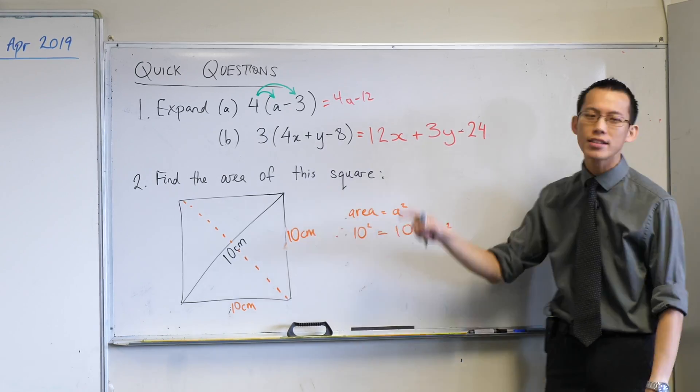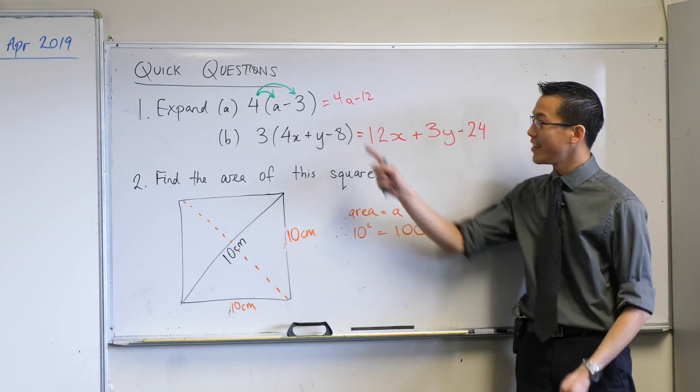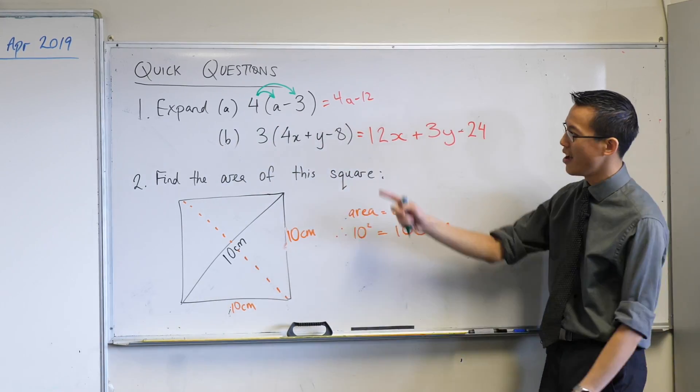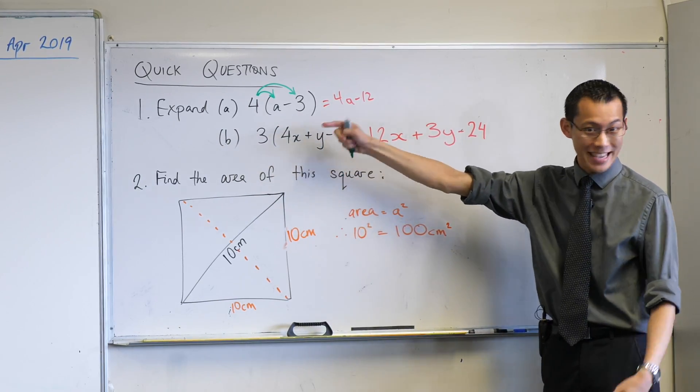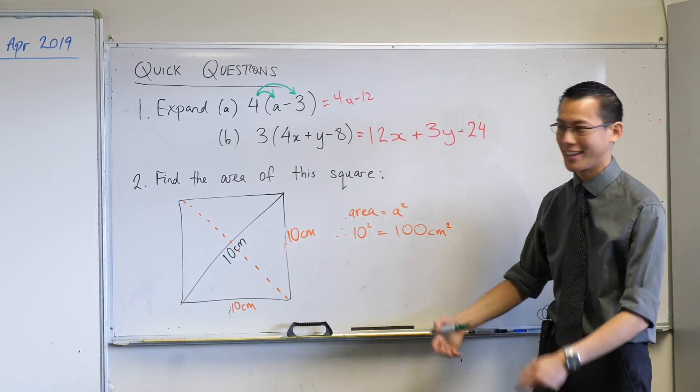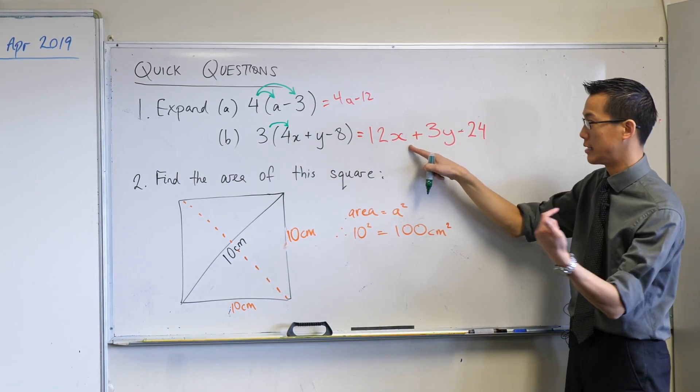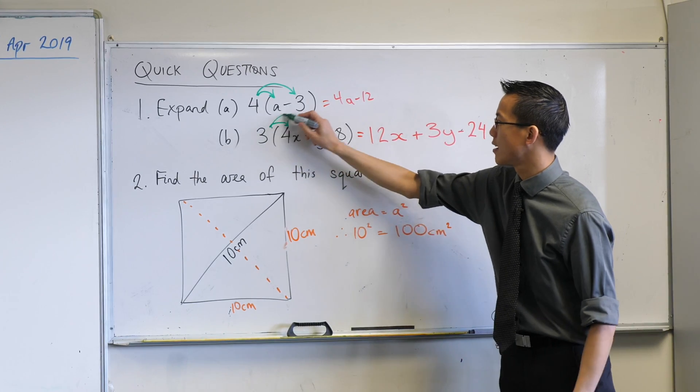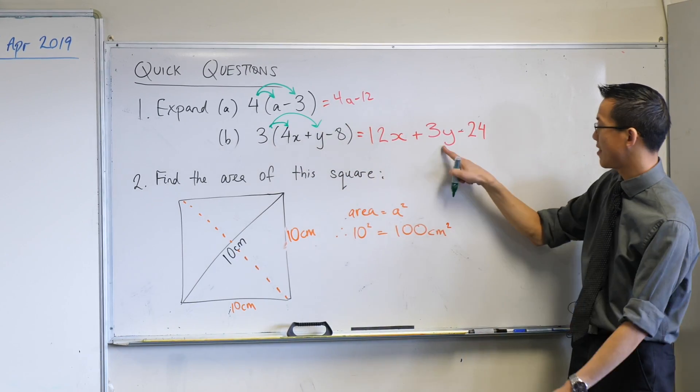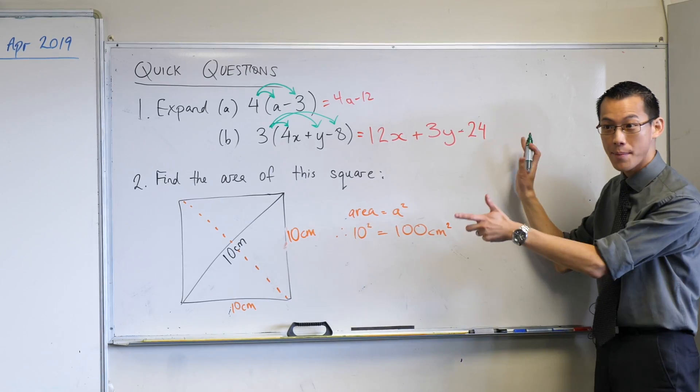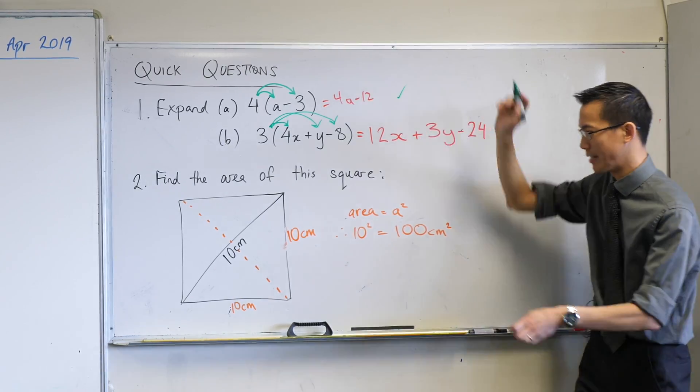Now this one here, we haven't seen many of them like this but you can see how the 4 distributes to everything inside the brackets. Well this 3 is also going to distribute to everything inside the bracket. So first it goes to the 4x, that's 3 lots of 4x, 12x there. The 3 also distributes to the y, there it is. And lastly, it distributes to the minus 8. So are you happy with that? Thumbs up. Great.